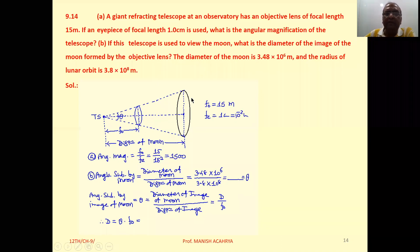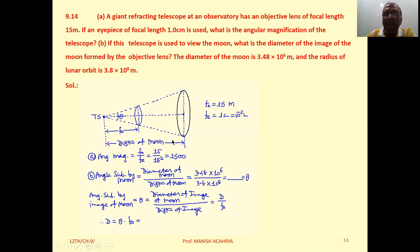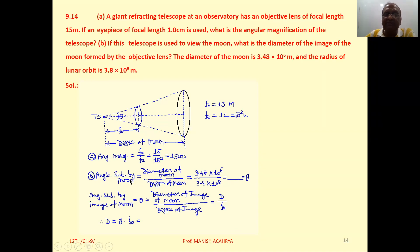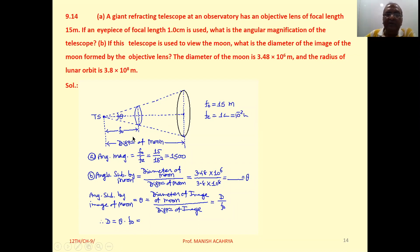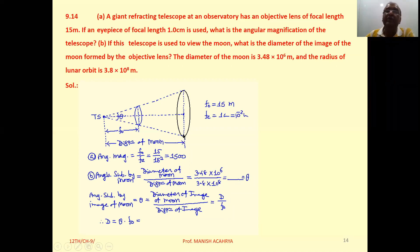Now consider the geometry: this is the moon and this is the telescope. The distance between the moon and telescope is given, and the diameter of the moon is also given. The angle subtended by the moon at the telescope is arc upon radius — that is, the diameter of the moon divided by the distance between the telescope and the moon. That is 3.48 × 10⁶ upon 3.8 × 10⁸. Substitute these values and solve to get the angle subtended by the moon at the telescope. Suppose that angle is theta.